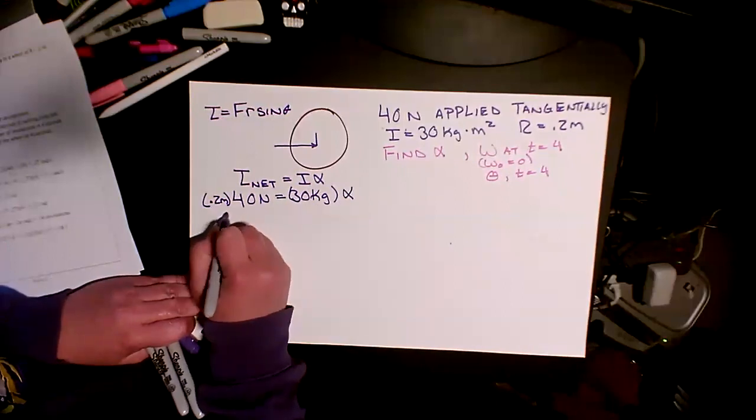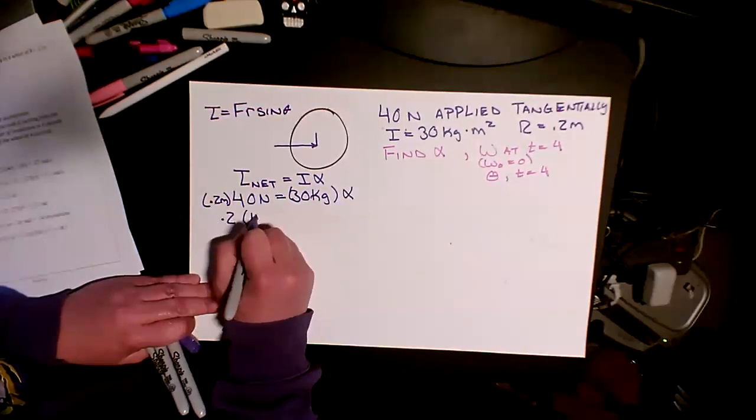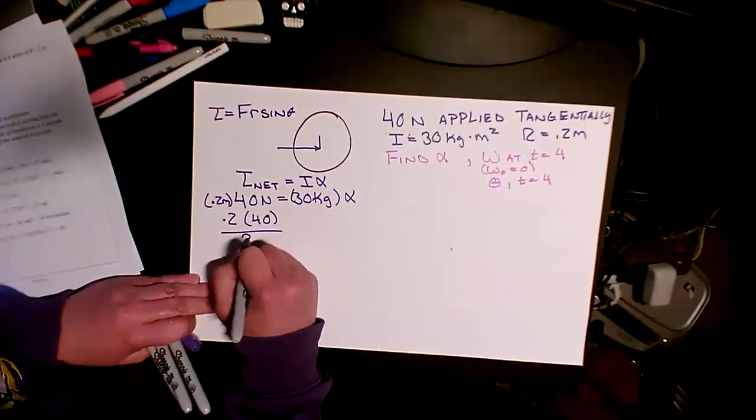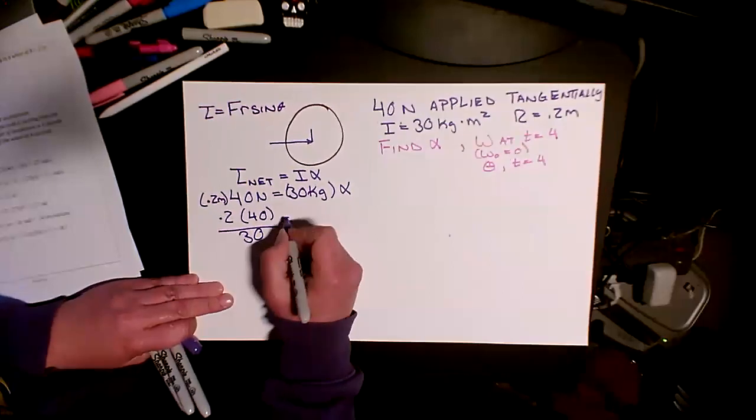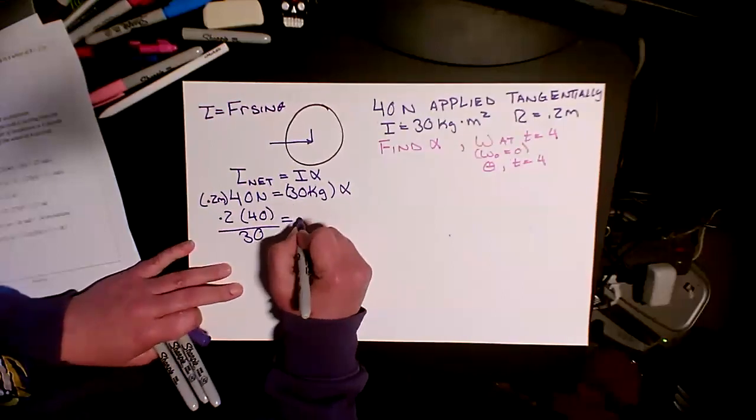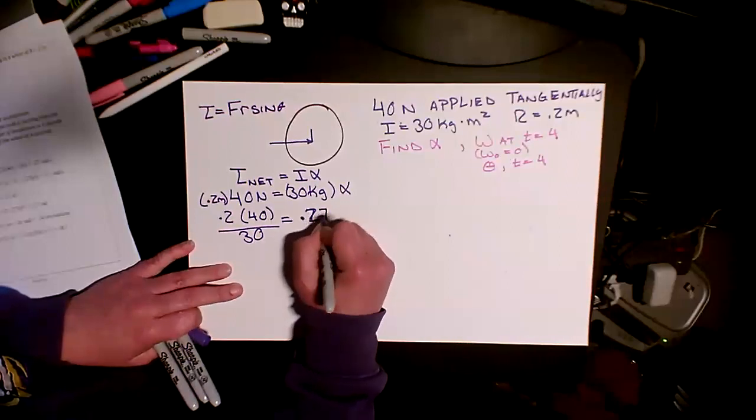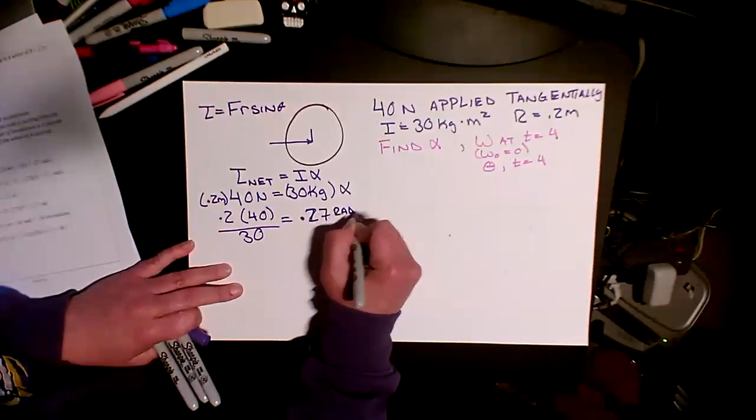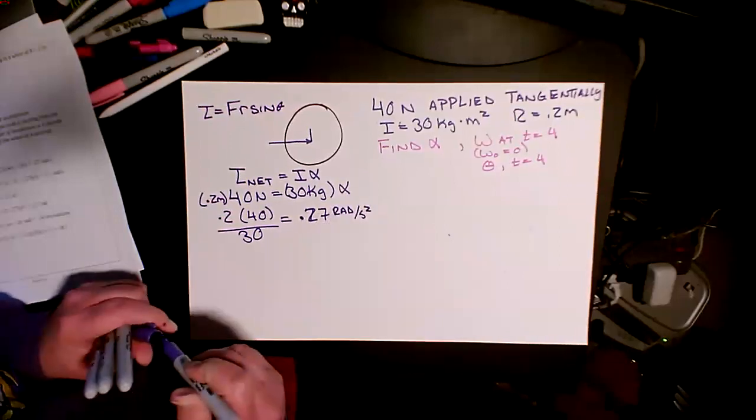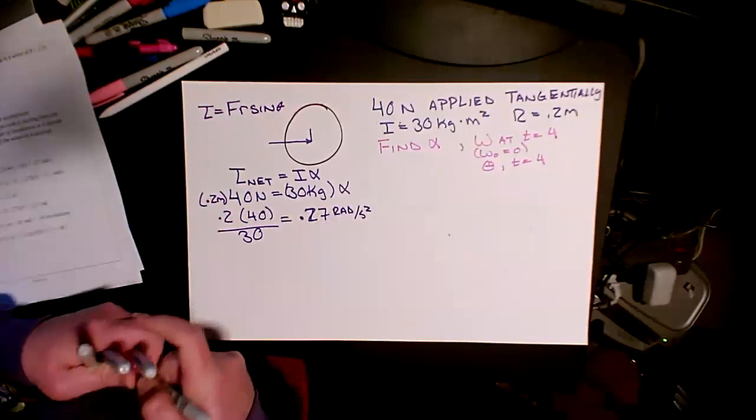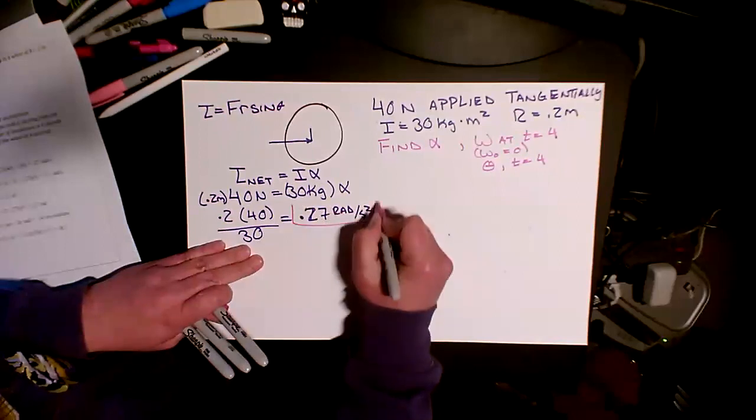So 0.2 times 40, divided by 30, and that gives me my alpha of 0.27 radians per second squared. So I've answered that first part. That's alpha.